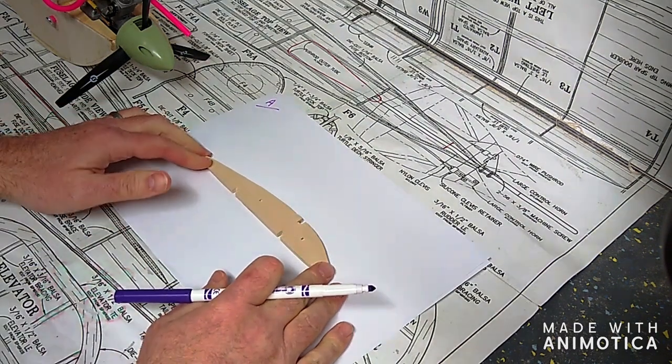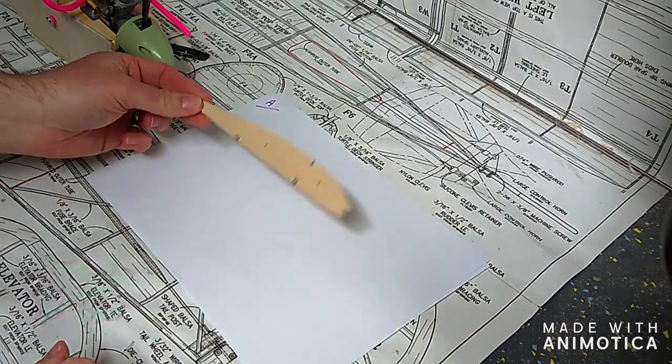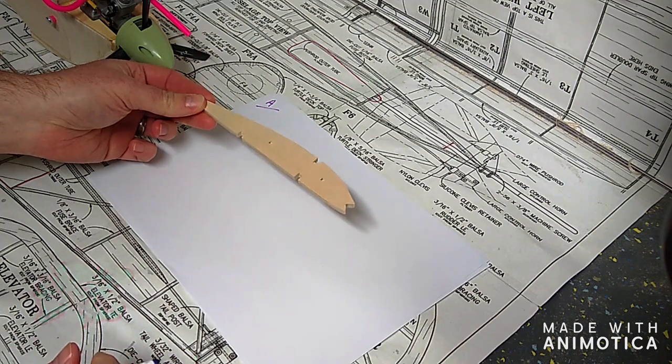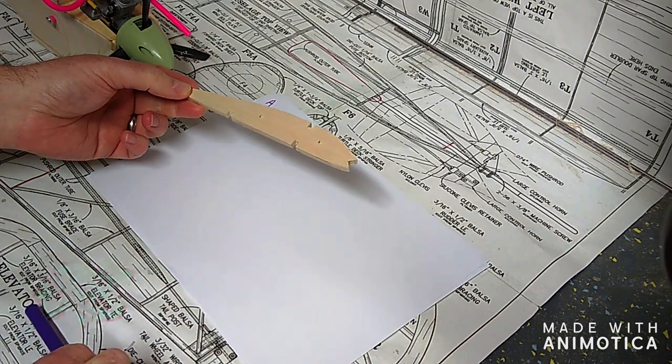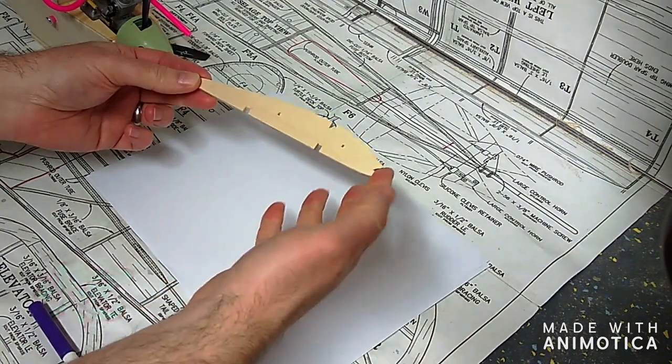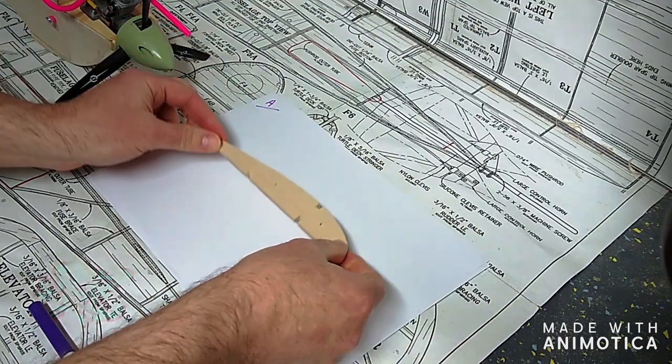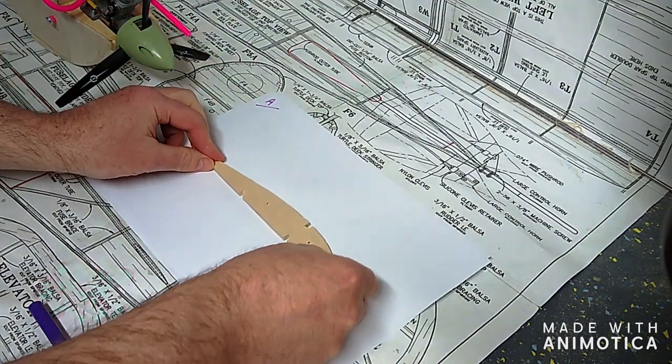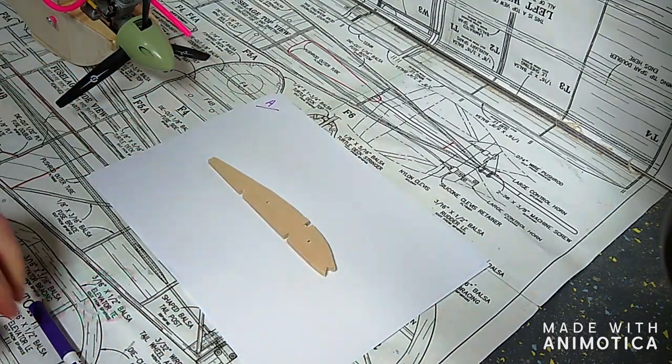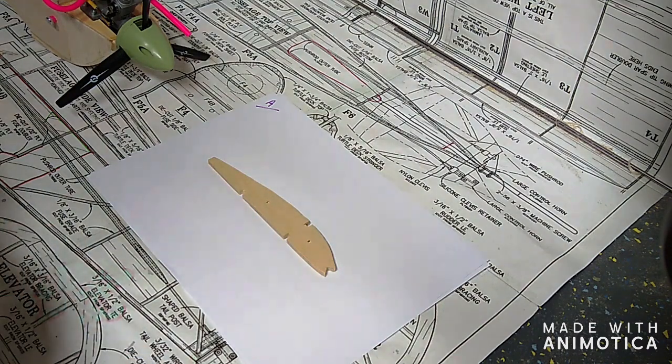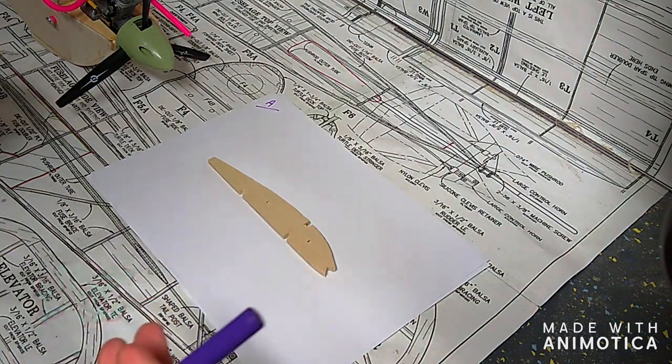The airfoil is the cross section shape of the wing. You can think of it as the shape of the wing rib. Airfoils come in many shapes and sizes, but the most common you're likely to encounter are flat bottomed like this one here. They can be under cambered, they can be semi-symmetrical or symmetrical. These are chosen depending on the style of airplane and what the designer would like that airplane to do.